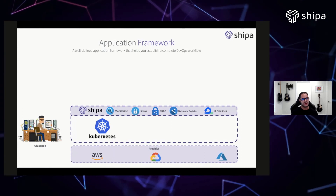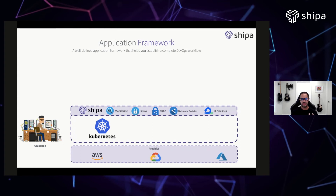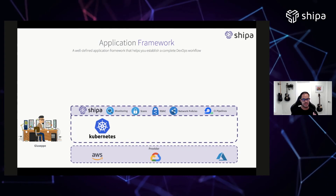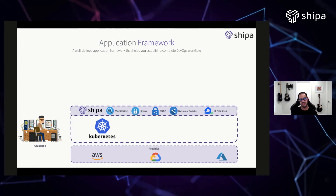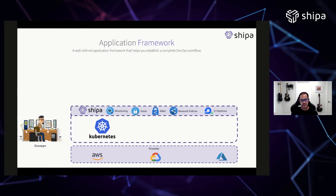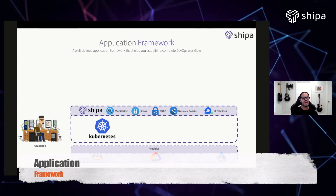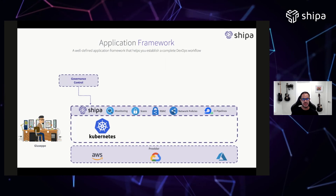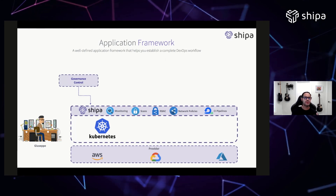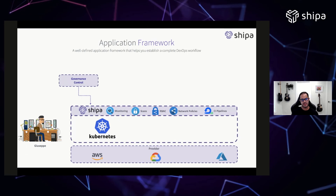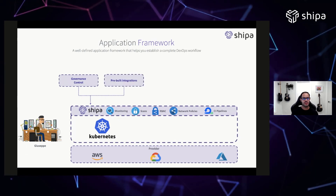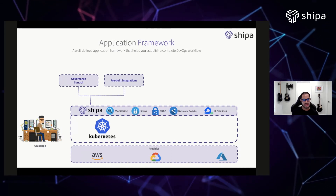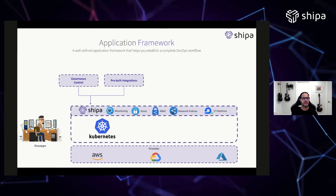That's where a framework comes in. Instead of Giuseppe bringing in several Kubernetes clusters and implementing monitoring, RBAC, policies, scans, and CI pipeline integrations from scratch, he brings a framework in place that he can connect to any Kubernetes cluster he chooses. It allows him to build governance controls around network, resource consumption, registry controls, and application deployments. It comes with pre-built integrations so Giuseppe can quickly deliver value to Julie around monitoring, incident management, and integration into CI pipelines and other tools.